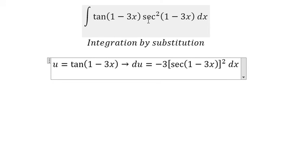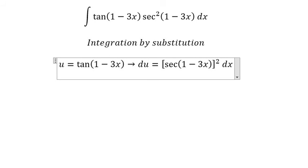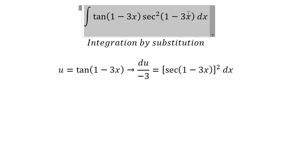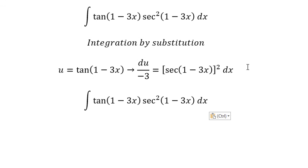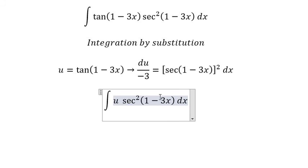Since we need to eliminate the negative 3, we divide both sides by negative 3. We substitute u for tan(1 - 3x) and du over negative 3 for the differential.